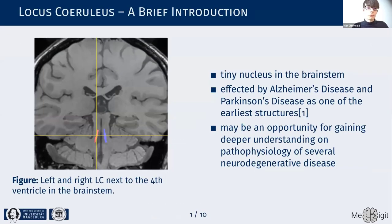This slide is for everyone wondering what the locus ceruleus is and why it might be important. The locus ceruleus is a fancy name for a tiny nucleus in the brainstem, visible on the left in this coronal slice. It's located alongside the fourth ventricle and is roughly cylindrical in shape.